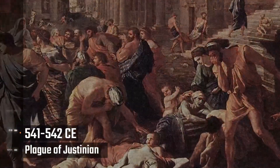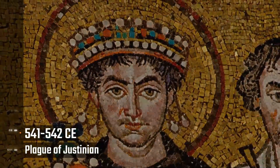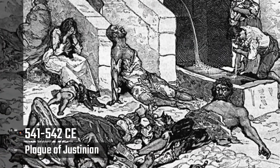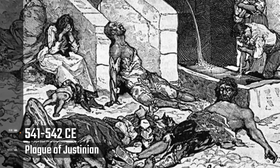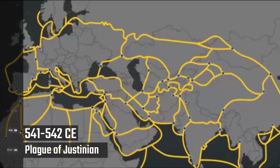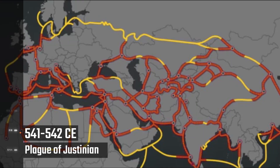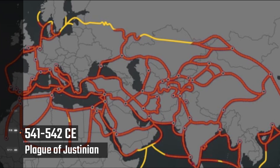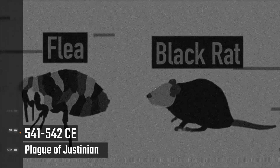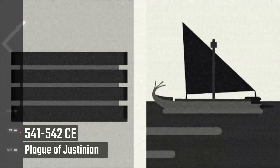Plague of Justinian, 541 to 542. During the reign of Emperor Justinian I, one of the worst outbreaks of the plague took place, claiming millions of lives — with estimated casualties of up to 30 to 50 million. The plague, Yersinia pestis, was carried to the Great Lakes region of Africa via overland and sea trade routes. The point of origin was Egypt, transmitted via black rats and fleas that traveled on grain ships and carts sent to Constantinople as tribute.